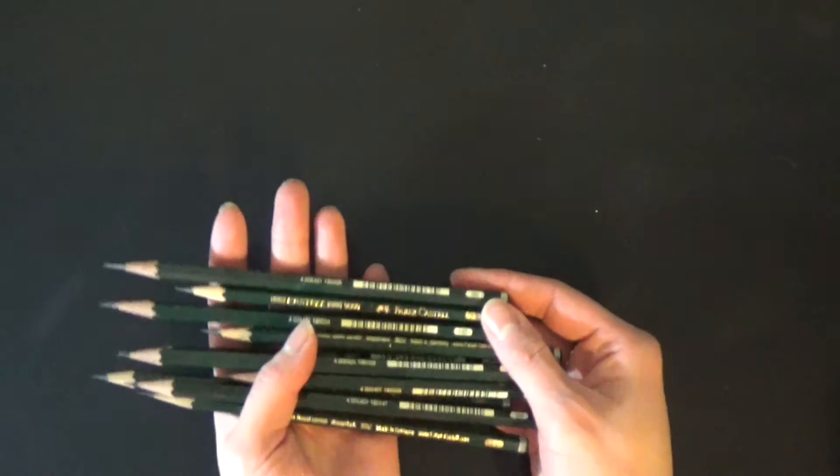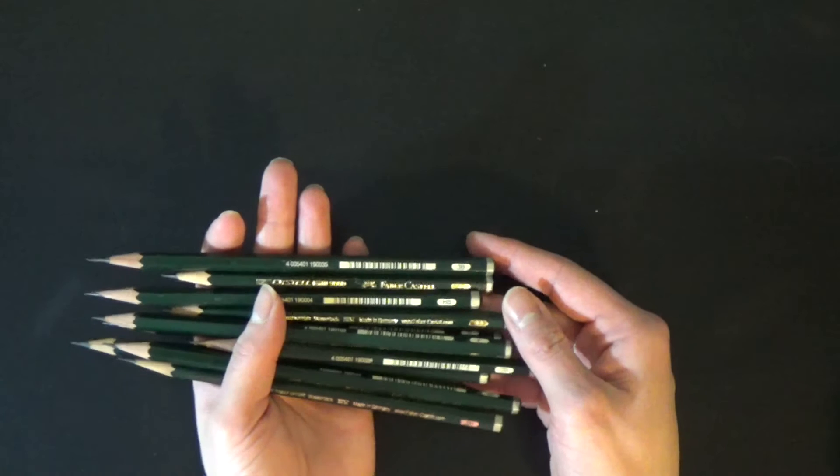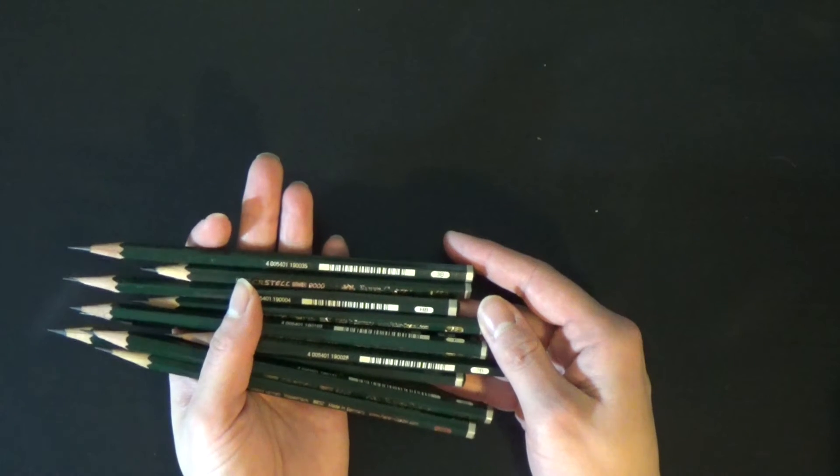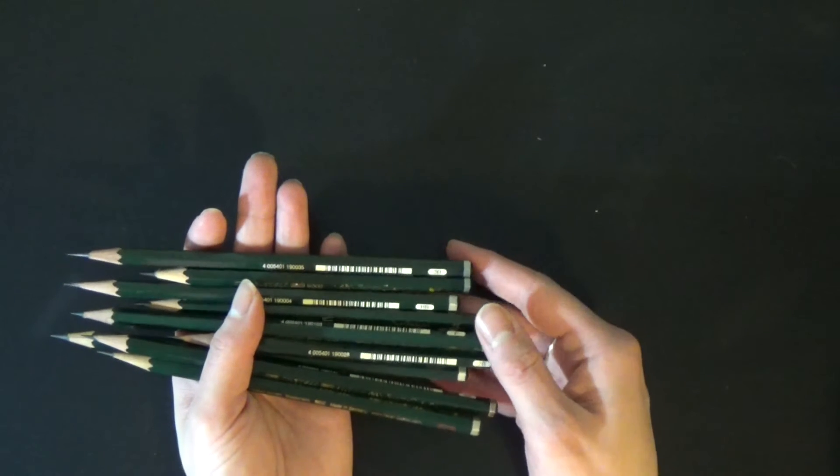So the most important thing to begin with is of course the pencils. Now hopefully you can see these. I like to use Faber Castell 9000 pencils. They come in a range from 6H which is the hardest pencil to 8B which is the softest and darkest pencil.